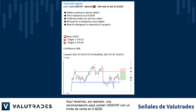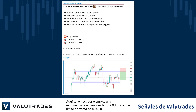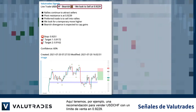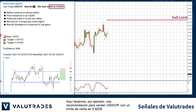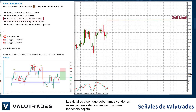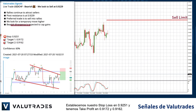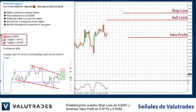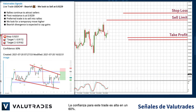Here we have, for example, a recommendation to sell Dollar Swiss with a sell limit at 0.9229. The details say that we should be selling into rallies as we are seeing a clear downtrend. We set our stop-loss at 0.9251, and we have take profits at 0.9172 and 0.9162. The confidence level for this trade is high at 60%.